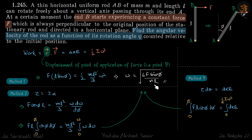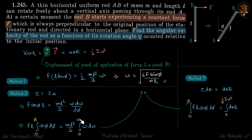Second method: calculate alpha first, then omega. Alpha is given by torque equals I alpha. At any angle Phi, the torque is F cos Phi times L. So F cos Phi times L equals I, which is ML squared over three, times alpha. Since we need omega in terms of Phi, we write alpha as omega dω/dΦ, move dΦ to the other side, and integrate both sides — Phi from 0 to Phi and omega from 0 to omega — and we get the same answer.